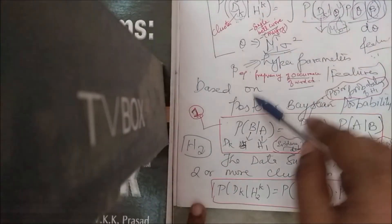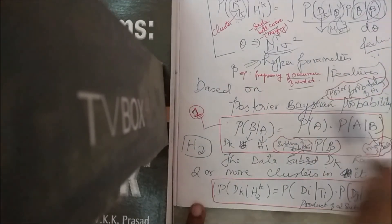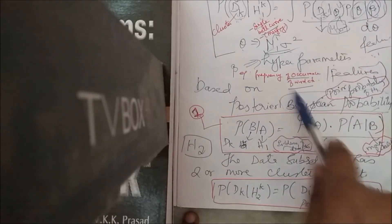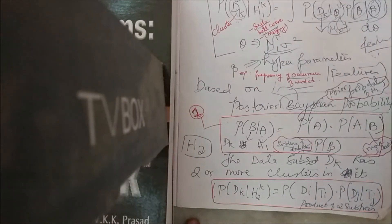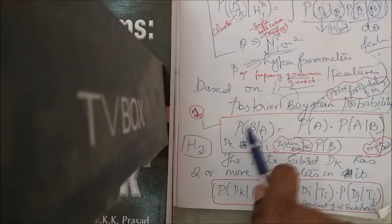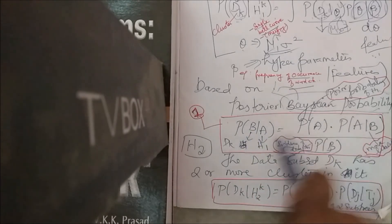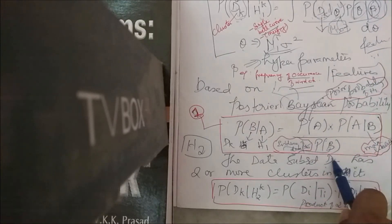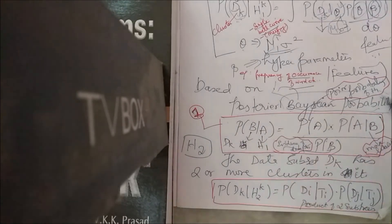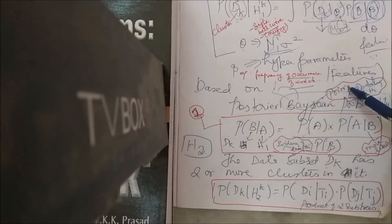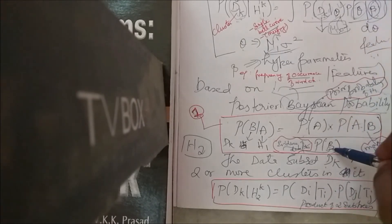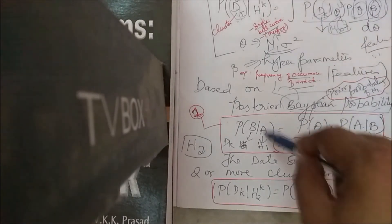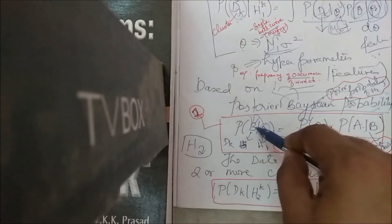This is based on Bayesian posterior probability. We already know Bayes' theorem: p(B|A) = [p(A) × p(A|B)] / p(B), where p(A) is the prior probability, p(A|B) is the maximum likelihood, and p(B) is the evidence. We now apply this to our case: given hypothesis H1, what is the probability that cluster dk is formed?